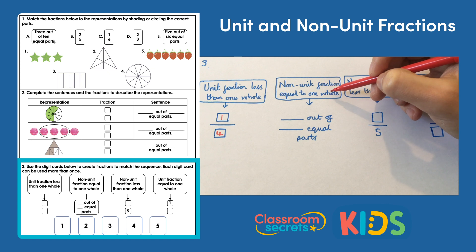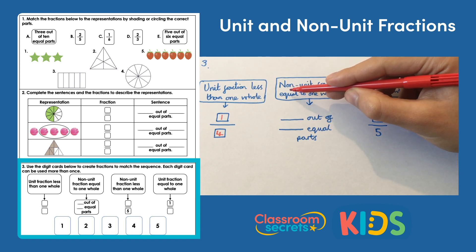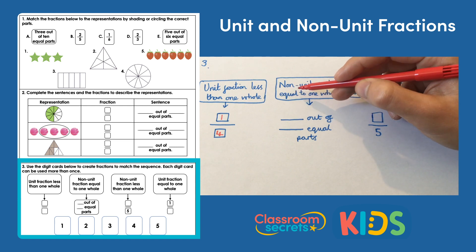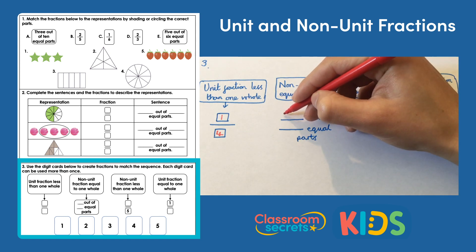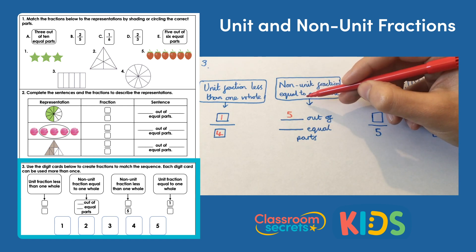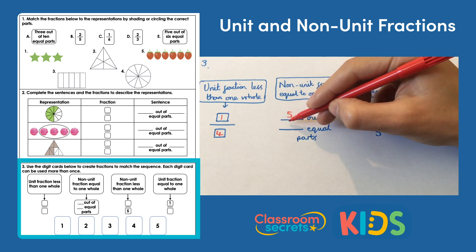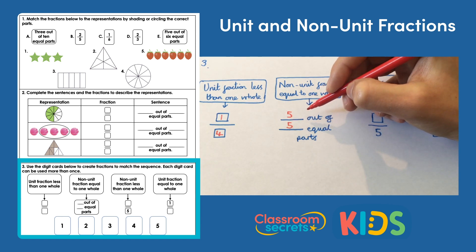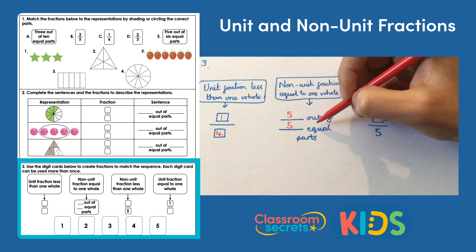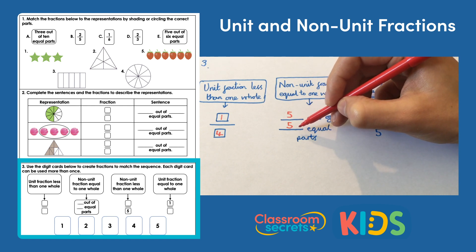The second one is a non-unit fraction equal to one whole. A non-unit fraction is a fraction where the numerator — the top number — is greater than one. So I could use five here. Five out of... it has to be equal to one whole, so five as my numerator has to be the same as five as my denominator. Five out of five equal parts: if I'm looking at five of the parts and there are five in the whole, I'm looking at the whole thing.